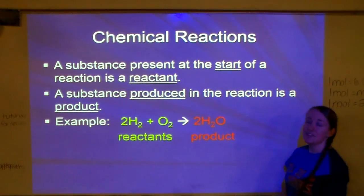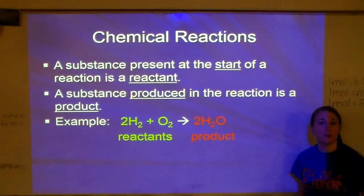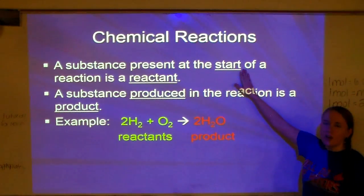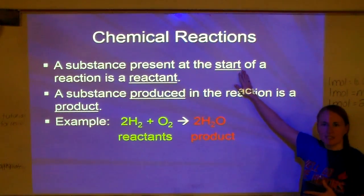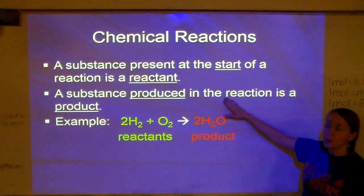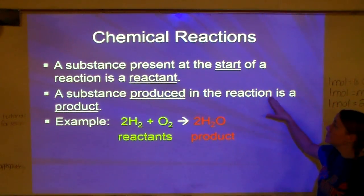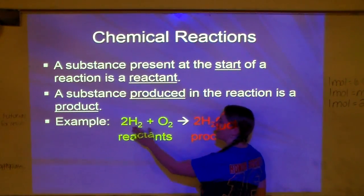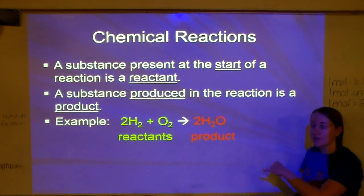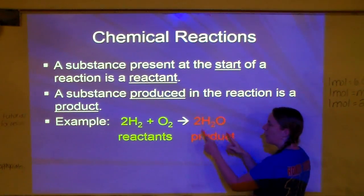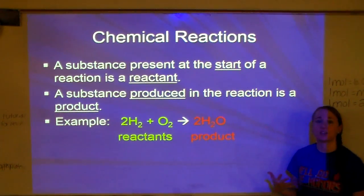In this class we're going to be focusing on chemical reactions a lot. A substance present at the start of a reaction is called a reactant — that's what we start with. We put those together to produce the products. The substances produced in a reaction are the products. For example, in the reaction of hydrogen and oxygen making water: hydrogen and oxygen are the reactants because that's what we're starting with, and once they bond and make water, water is the product.